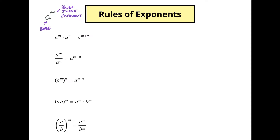Here we've got a to the m power times a to the n power, which is equal to a to the m plus n. Let's take a look at what this actually looks like as an example. Let's say we've got a squared times a cubed. If we expanded this out, this would be a times a times a times a times a. We've got five factors of a multiplied together, so we have a to the fifth power. And we can see that this is two plus three — that's why this addition rule works.